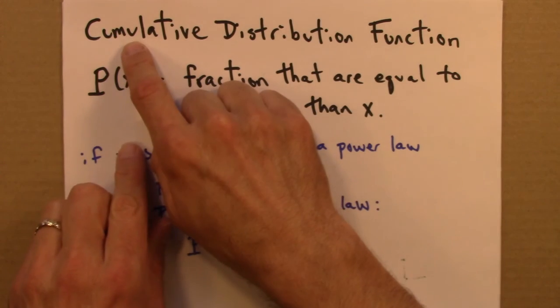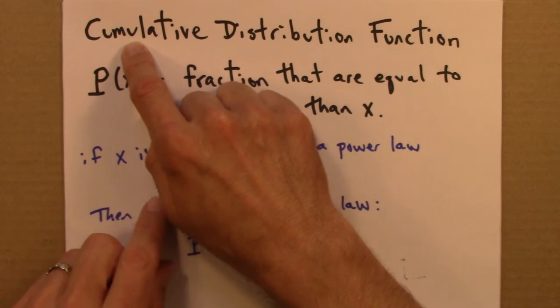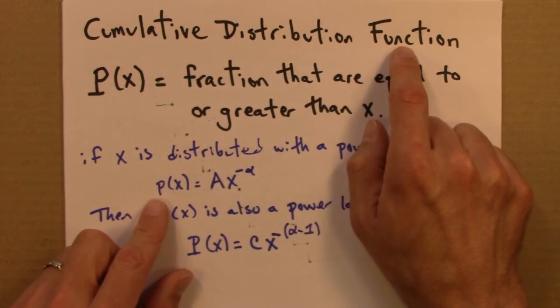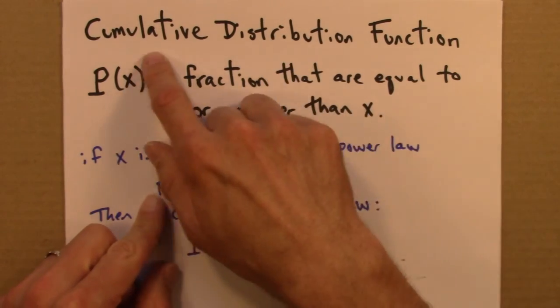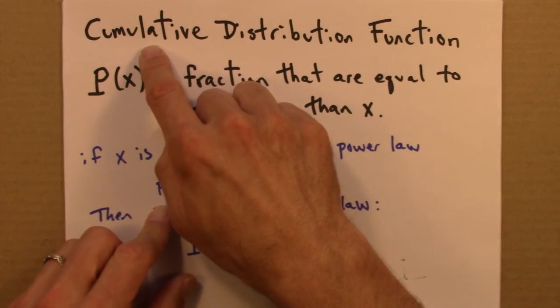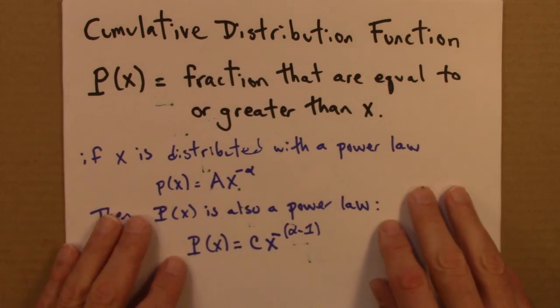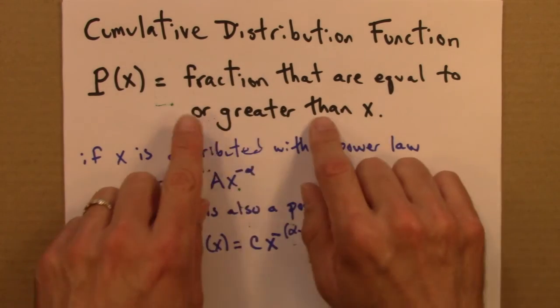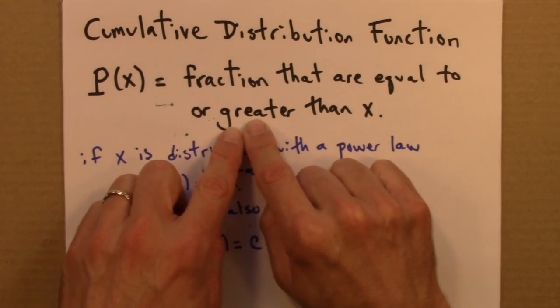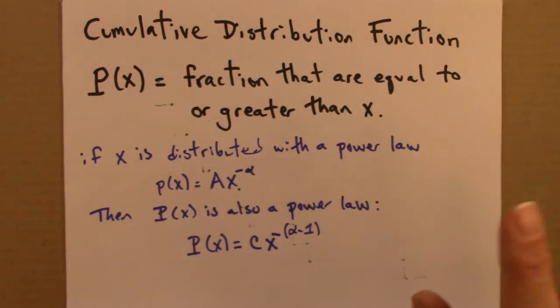So, this is sometimes called a complementary cumulative distribution function because it's the complement to the more normal or typical one. But, often, in papers on power laws, this is just called the cumulative distribution function. And, that's fine. It's accumulating a distribution. So, it still seems perfectly fair to call it a cumulative distribution function. But, be aware that there are alternate definitions for this depending on if you put a greater than or less than here.